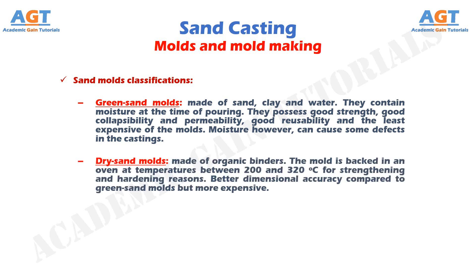Dry sand molds are made of organic binders. The mold is packed in an oven at temperatures between 200 and 320 degrees Celsius, for strengthening and hardening reasons. Better dimensional accuracy compared to green sand molds but more expensive.